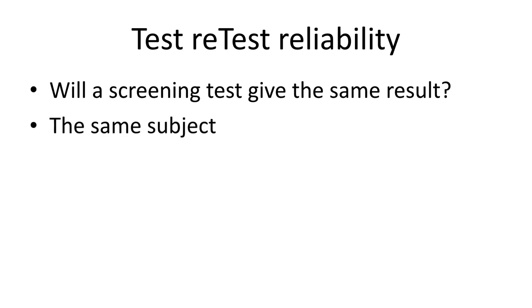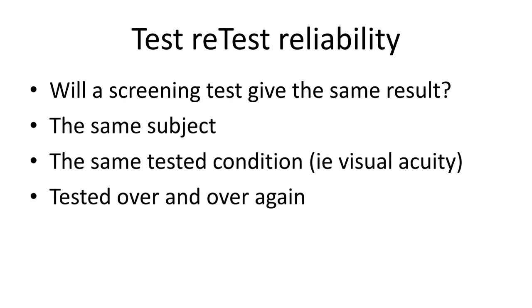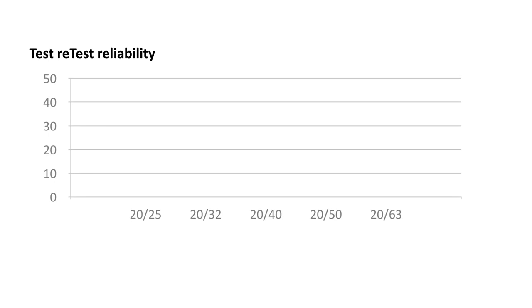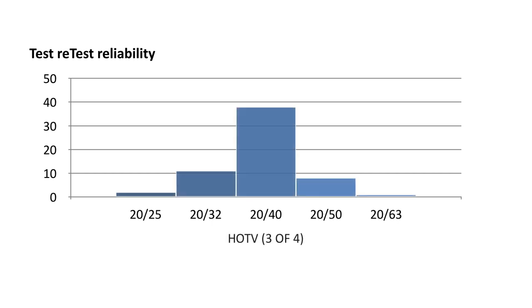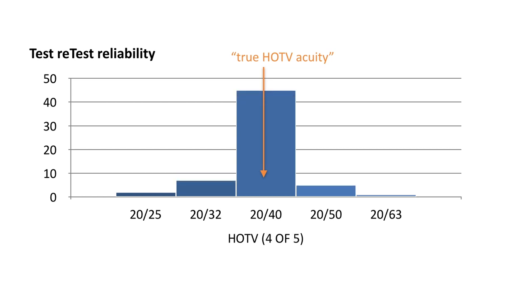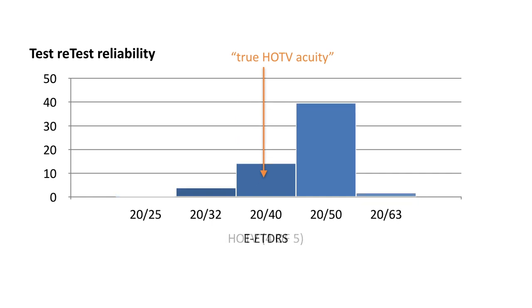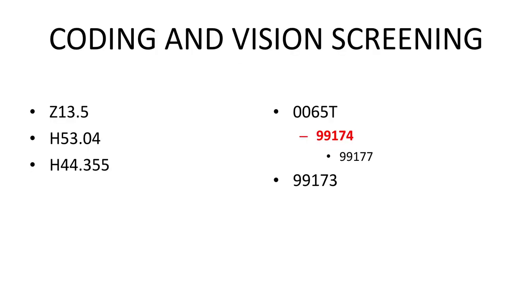If we take the exact same photo screener and test the same child more than once, the screening test may not give the same result each time. By test-retest reliability, if we check children with the exact same acuity screening device, much of the time their screening level may be 20/40, but other times by good or bad luck, or how they are perceiving the test at that time, they may get 20/25 (passing), 20/32, 20/50, or 20/63.